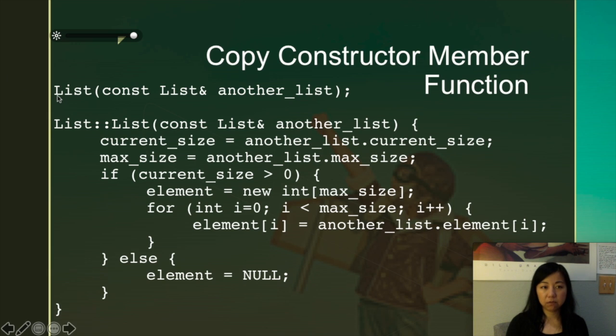Let's see how to do it. The member function looks like this. So it's the name of the class and then a const, and then the name of the class again with an ampersand and then the variable, and then you need list colon colon because it's a member variable. Then this is how we are implementing it. The current size will be another list current size, max size is another list max size. And then we need to, if the size is current size is bigger than zero, we need to copy one element by one element into the current list, right? And so this part needs to be done. Someone needs to make a real copy of the object.